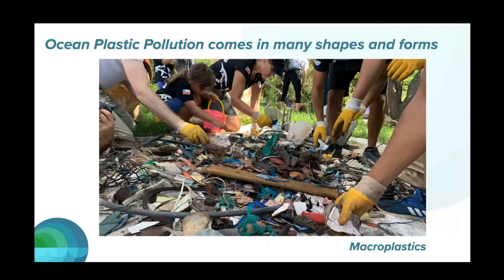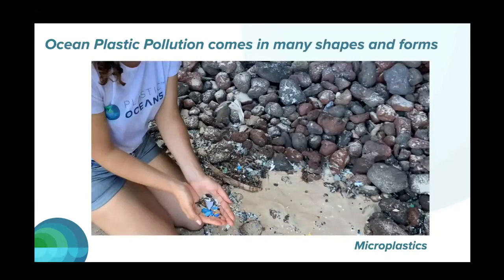Plastic pollution comes in many shapes and forms. Here you see a photo we took last year on Easter Island in the Pacific, where they have a very big plastic pollution issue. This plastic is not from the local people — it floats around in the ocean and unfortunately, through the southern Pacific gyre, ends up on the coastlines of Easter Island. People have to deal with plastic that is not theirs.